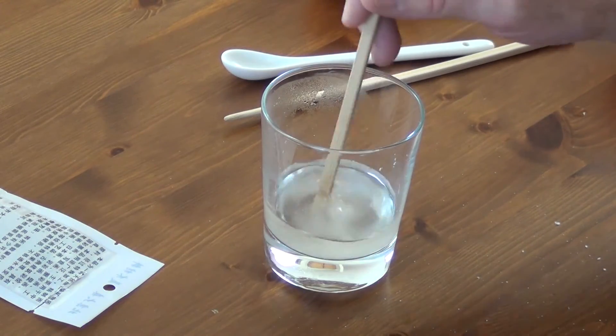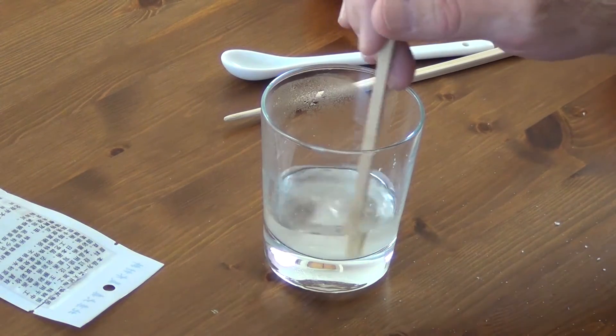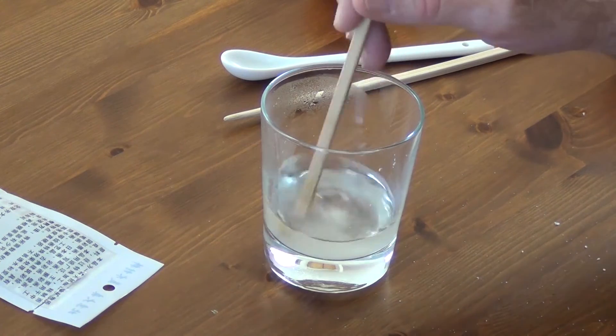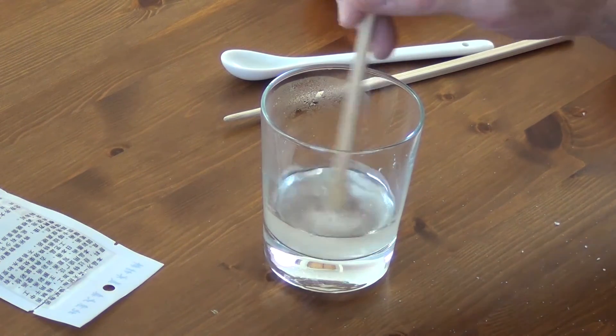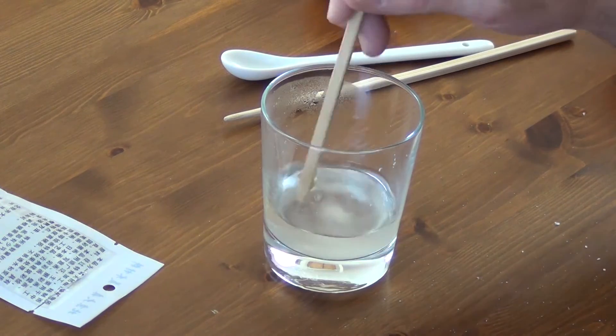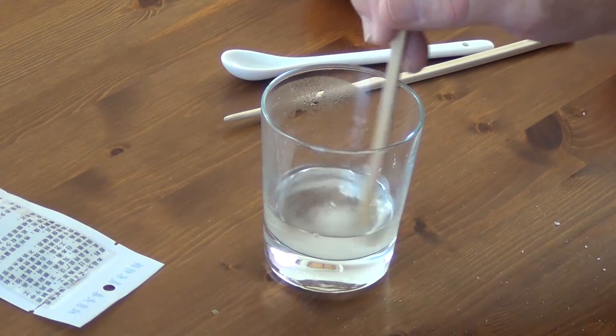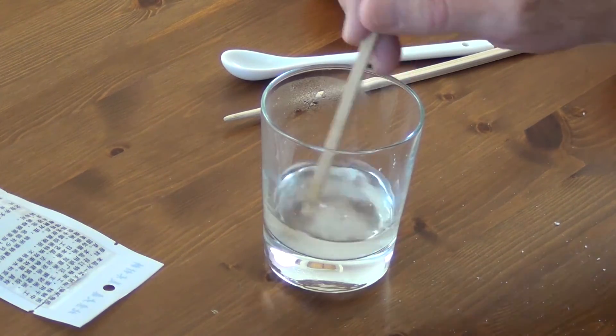It looks like it's getting pretty saturated now. It's still starting to look a little milky and not dissolving the way it normally would. Let's see if I'm stirring. It's taking longer for those to dissolve, which means it's becoming very close to saturated.